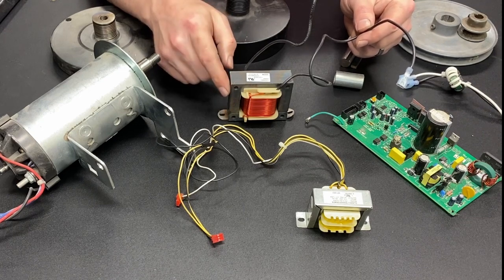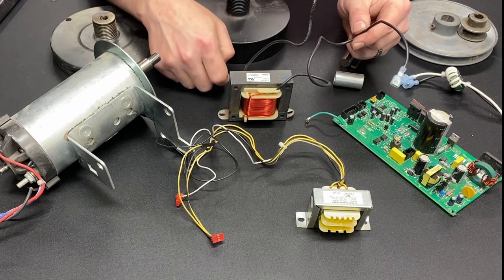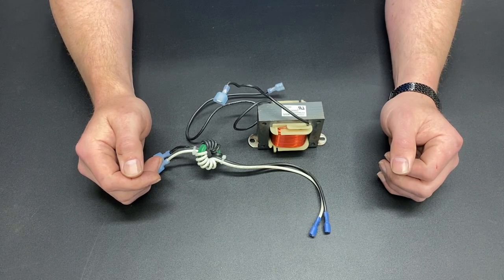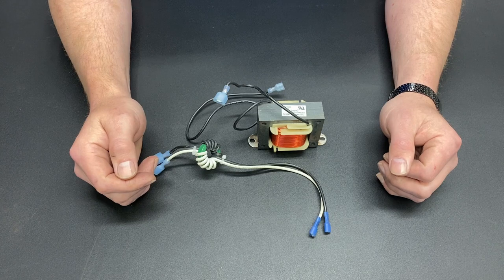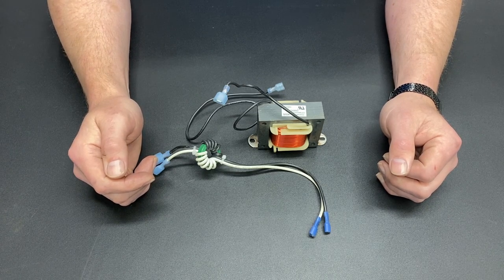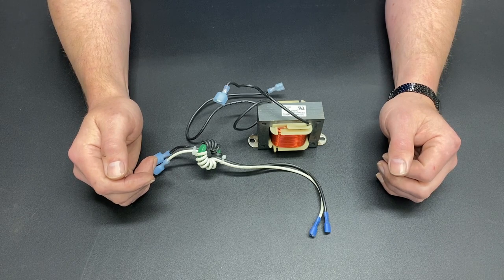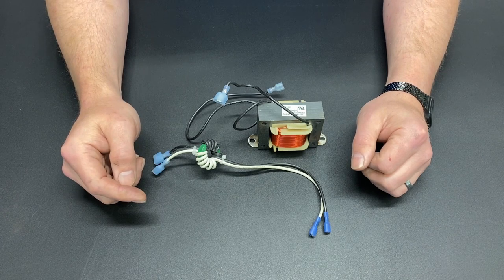But again, that begs the question. My treadmill didn't come with one of these. Where can I find one? I found the best place to get them is eBay. I originally shot this video about three, four weeks ago. I did all the video for all my Q&A at one time, and at that time, eBay was the best place to find a choke. However, I have found another source for chokes.